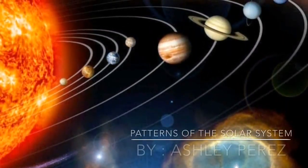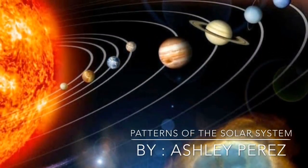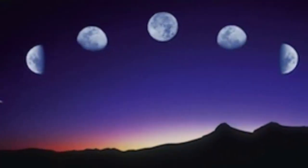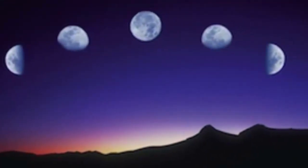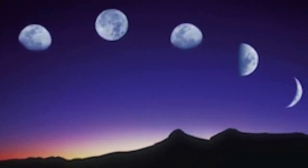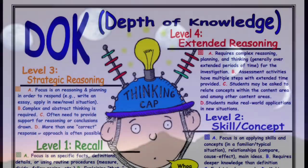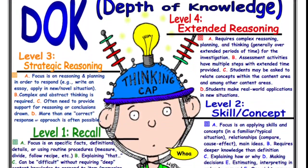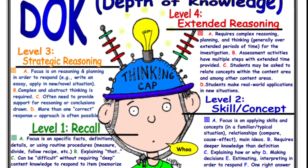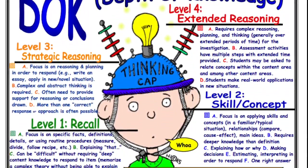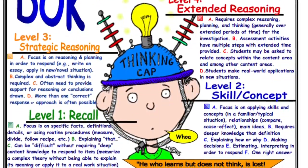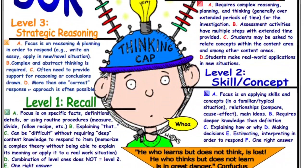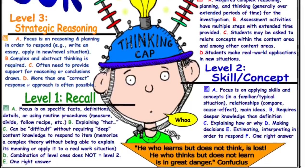Patterns of the Solar System is a 15-day lesson plan in which first grade students study the patterns of the moon and sun through technology. In order to maintain an academically rich and challenging learning environment, this unit draws upon Norman Webb's Depth of Knowledge Levels to push students into higher levels of thinking.